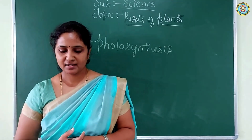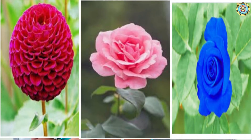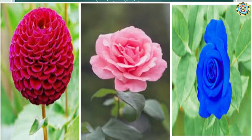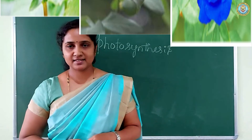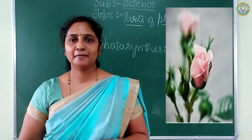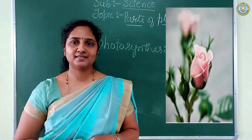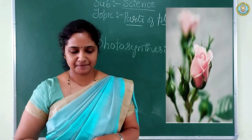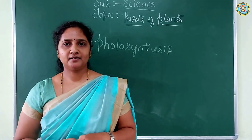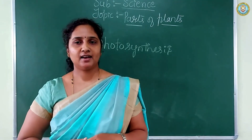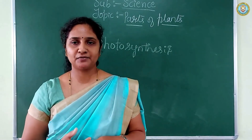Flowers are the brightest colored part of a plant. Flowers are of different colors, sizes and shapes in different plants. These flowers blossom from the buds of the plant — first the plant produces buds, and then it blossoms into flowers. The primary function of a flower is reproduction; flowers help in the reproduction process of the plant.